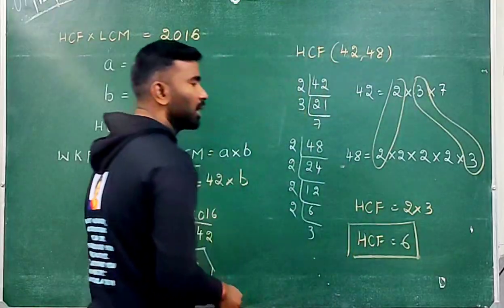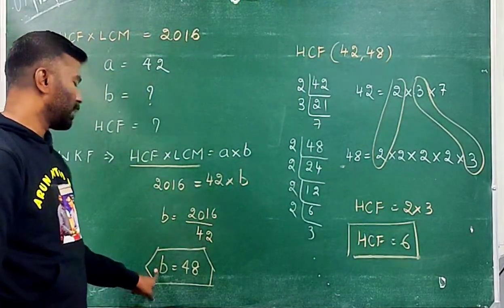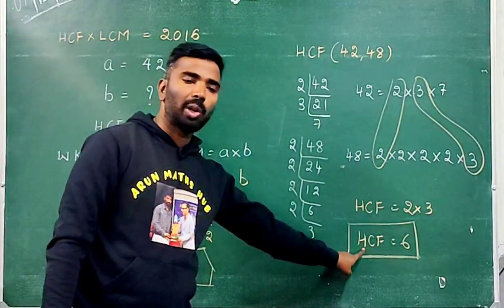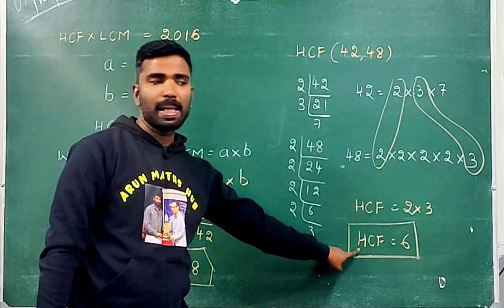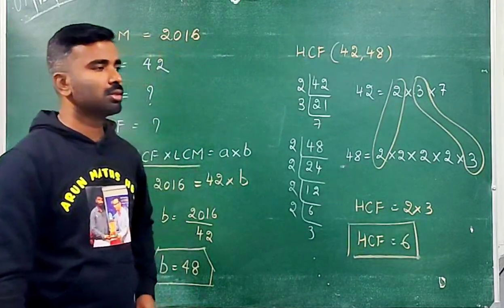Finding out the other number gets 1 mark, and finding the HCF gets 1 mark. So HCF equals 6.